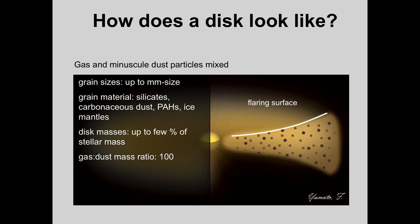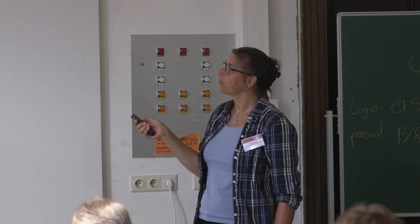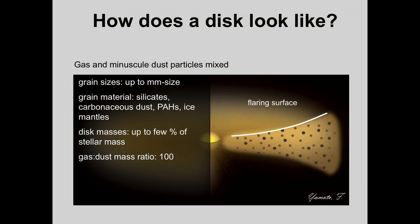Even though these disks are geometrically very thin, they are not completely flat — they are actually opening up, which is called flaring. This was an important result from observations more than 20 years ago, because we needed to get the outer disk warmer than it would be if it were a completely flat structure. If we have a flaring surface, radiation from the star can interact with the surface even at larger distances, and about half the radiation gets scattered into the disk.